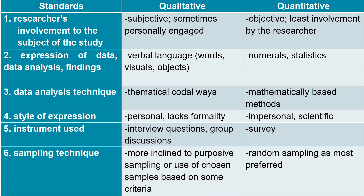For style of expression: qualitative research is personal because it lacks formality, while quantitative research is impersonal because it is based on scientific method. For instrument used: qualitative researchers use interview and focused group discussions, whereas quantitative researchers use survey questionnaires. For sampling techniques: qualitative research is inclined to non-random sampling, specifically purposive sampling, while quantitative research uses random sampling techniques in getting the sample size of the population.